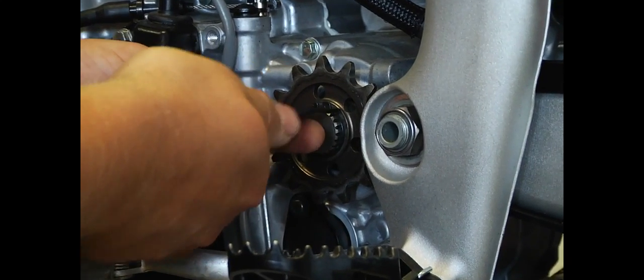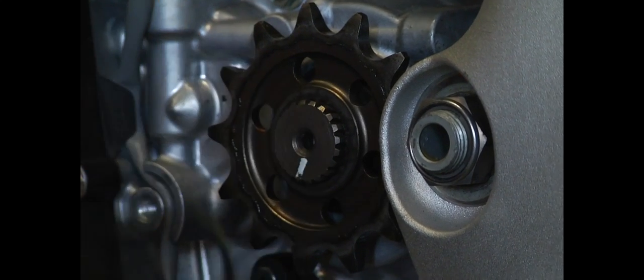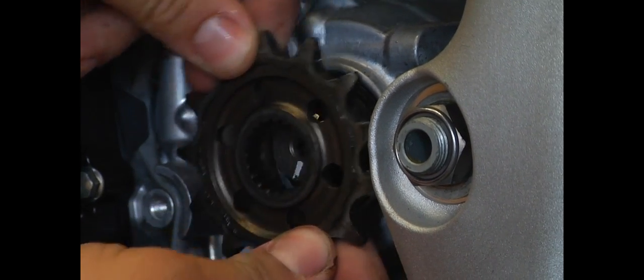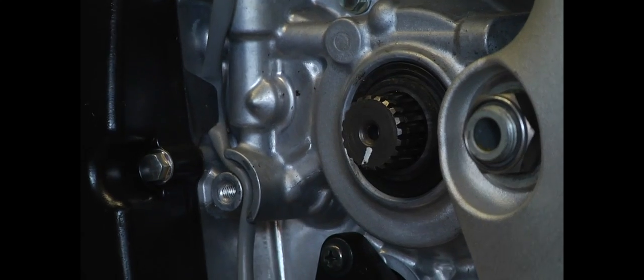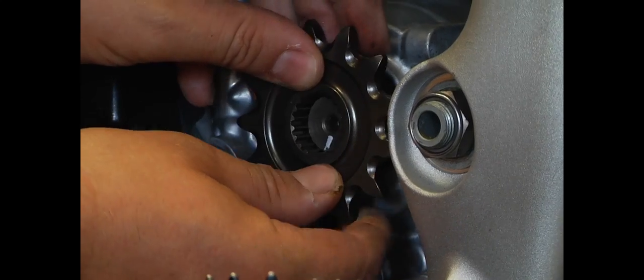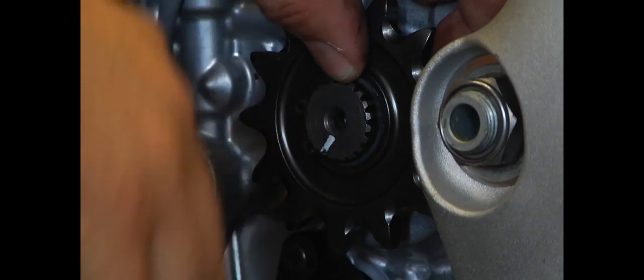On the Kawasaki's, they use little clips. So you need some little pliers to carefully remove the clip. And just set it down. Pull the stock one off. Install the Renthal right on and then right back on with the clip.